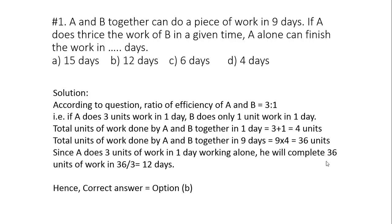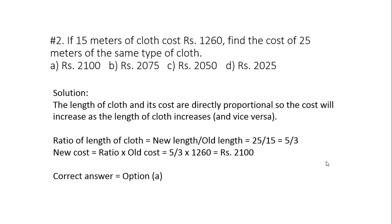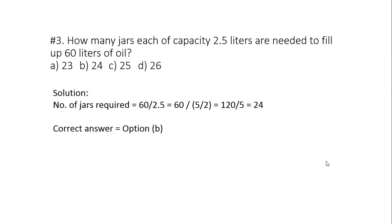Question 2: If 15 meters of cloth cost rupees 1260, find the cost of 25 meters of the same type of cloth. Solution: As we know, the length of the cloth and its cost are directly proportional. It means as the length increases, the cost will also increase and vice versa. The ratio of length of cloth is new length divided by old length, which is 25 by 15, simplified to 5 upon 3. Now in order to find new cost, we multiply this ratio with the old cost: 5 by 3 multiplied by 1260 will give 2100 rupees. So the correct option is option A.